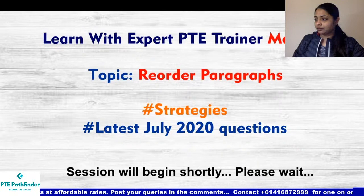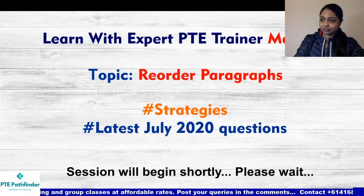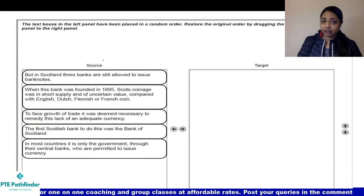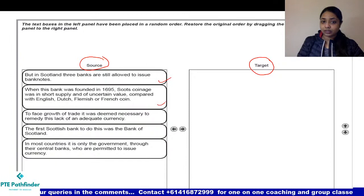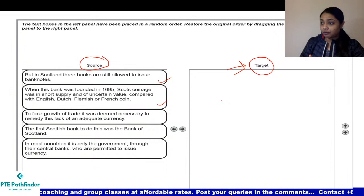Let's get started with our class. In reorder paragraphs, what happens is you get a passage on the screen in which the text is arranged in a random order. There will be two types of panels on the screen: one is called a source panel and the other is called the target panel. In the source panel you get several text boxes that you are required to rearrange in correct order in the target panel. Depending on how many text boxes you have arranged correctly, you will get your score.